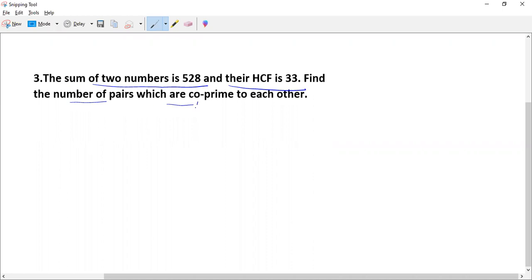Co-prime is nothing but relatively prime. Relatively prime means if you have two numbers A and B, their HCF must be equal to one.